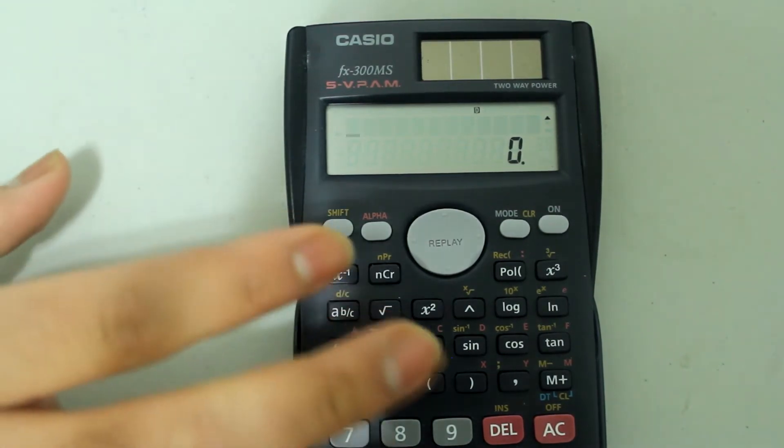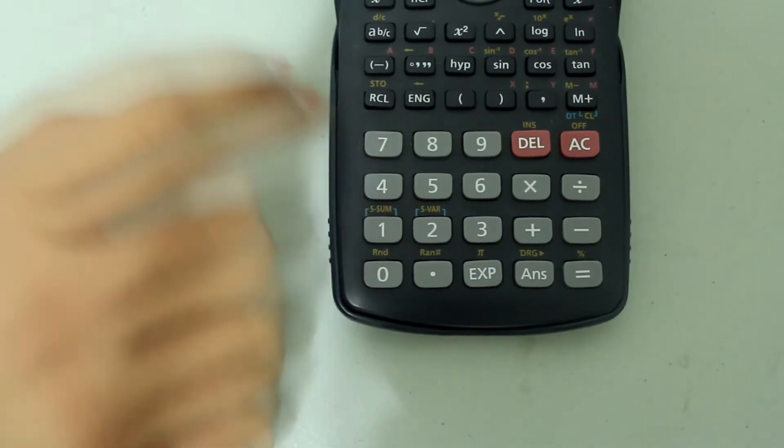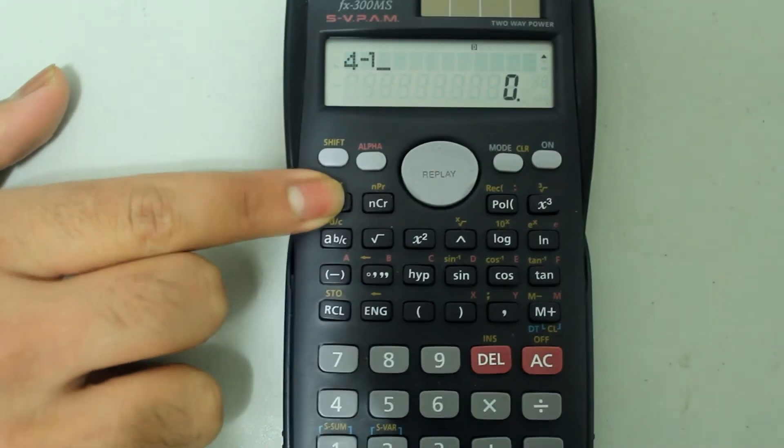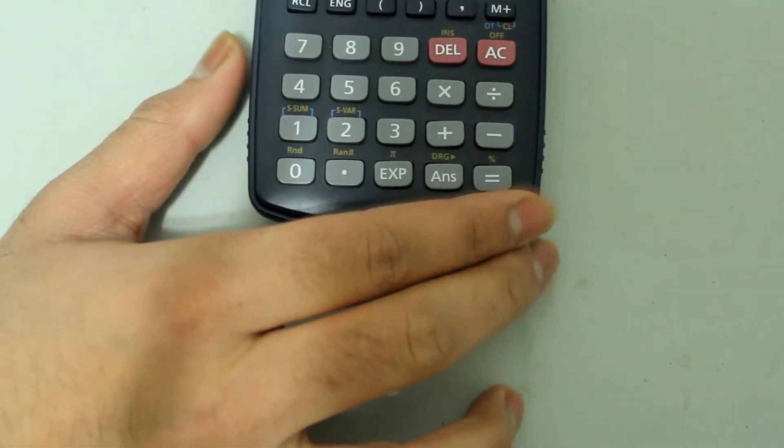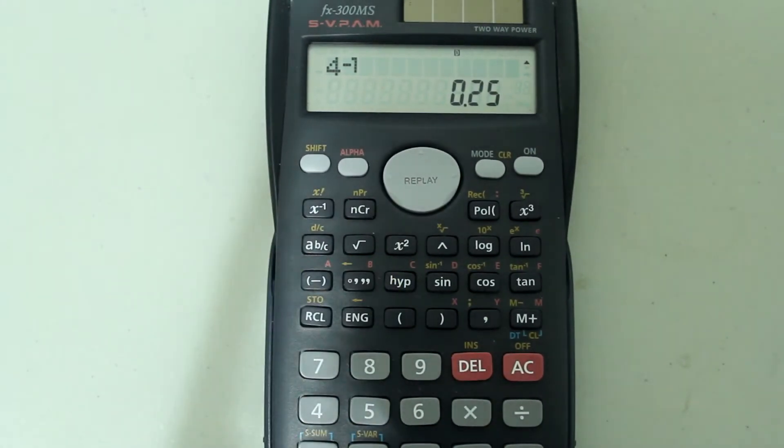For example, let's say we wanted to find the reciprocal of 4, so let's type in 4 on the number pad. And then, this is what the display shows, just type in this button and press equals. And there we have it, the reciprocal of 4.